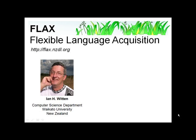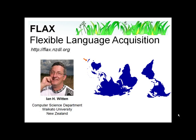This project is centered in New Zealand. Here's a map of the world. When we look at the world, we think of New Zealand as being on the top. We're in the top left hand corner and that's where the FLAX project is centered. The URL is FLAX.NZDL.org. We call it FLAX for flexible language acquisition. FLAX is also a New Zealand plant — you can see some up at the top of the screen.